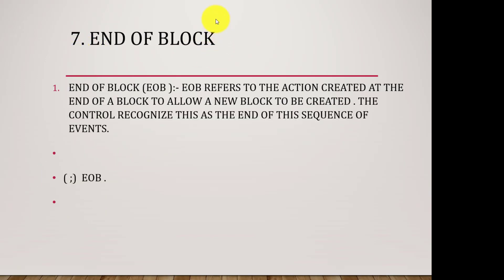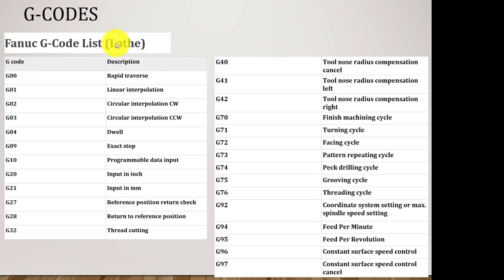The seventh and most important term is end of block. Every block is ended with a semicolon, and this semicolon is known as end of block — every block has to be ended with it. These are the basic terms used in a CNC program. Now the most important thing is G-code. Here is the FANUC G-code list in which every G-code defines a single operation and how the machine reacts according to the G-code. These individual G-codes will be explained one by one in our other video. So this is all about the basic introduction to CNC lathe machine programming — see you in the next video, thanks for watching.